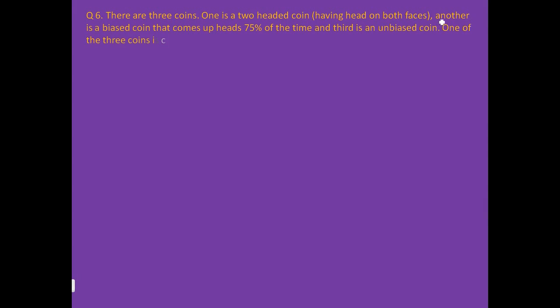Friends, now we will start our new video in which we have taken exercise 13.3, question number 6. There are three coins: one is a two-headed coin having a head on both faces, another is a biased coin that comes up heads 75% of the time, and the third is an unbiased coin. One of the three coins is chosen at random and tossed. It shows heads. What is the probability that it was the two-headed coin?